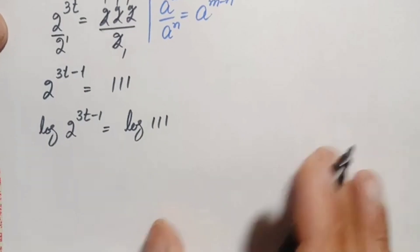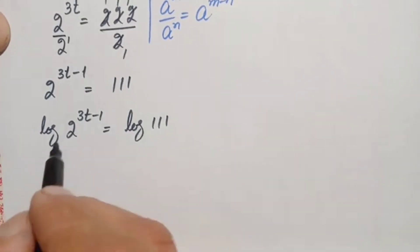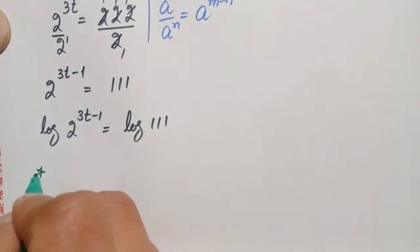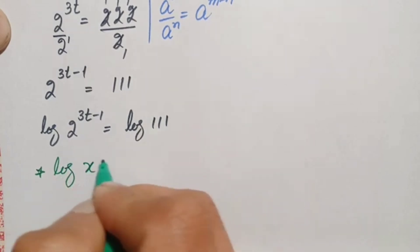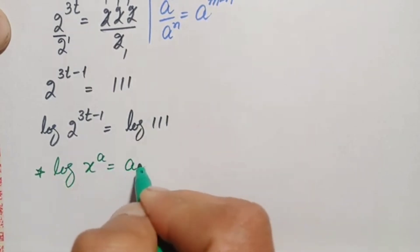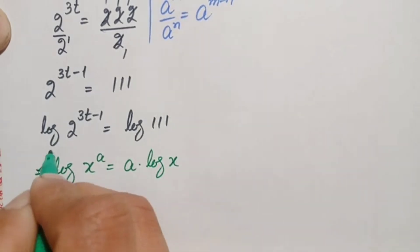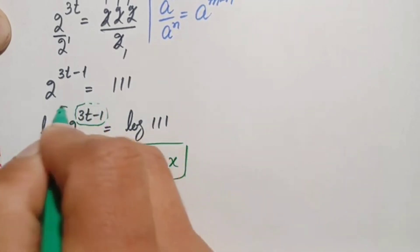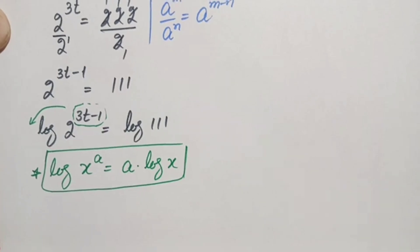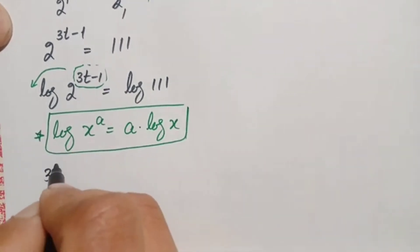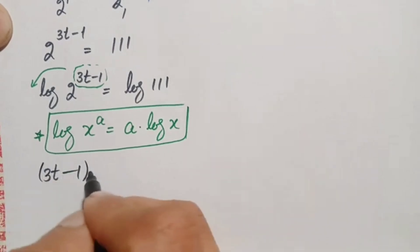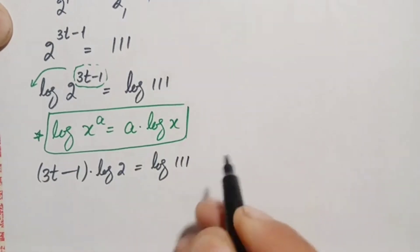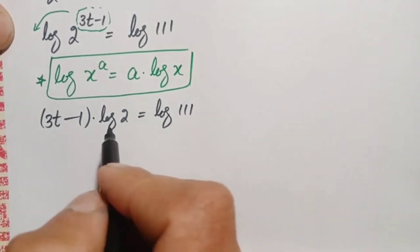On the left hand side we will use the logarithm power rule: log of x raised to the power a equals a times log of x. Using this identity, we move 3t minus 1 to the front of the log, so the equation becomes (3t minus 1) times log of 2 is equal to log of 111.